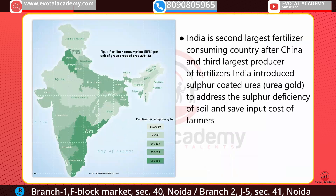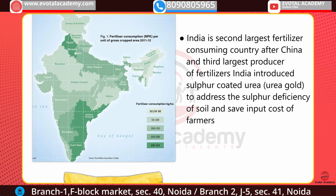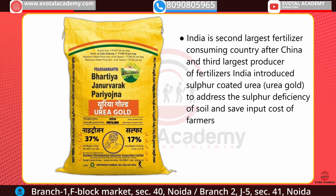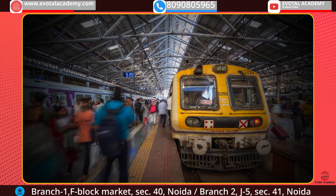The next news is about fertilizers. India is the second largest fertilizer-consuming country after China and the third largest producer of fertilizers. India has introduced sulfur-coated urea, also called urea gold, to address sulfur deficiency in soil and to save input costs for farmers.